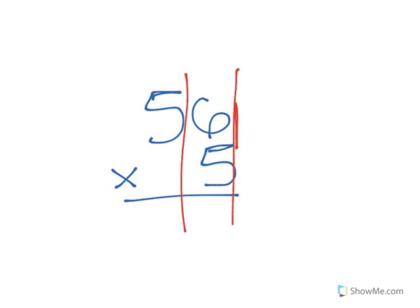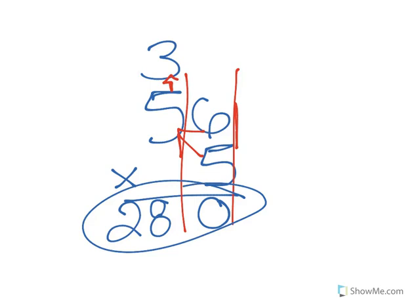So five times six. 30. You put the ones digit down here and the tens digit up there. Then do over there like that. Five times five is 25. And then add on whatever is up there. So 25 and three is 28. So the whole answer is 280.